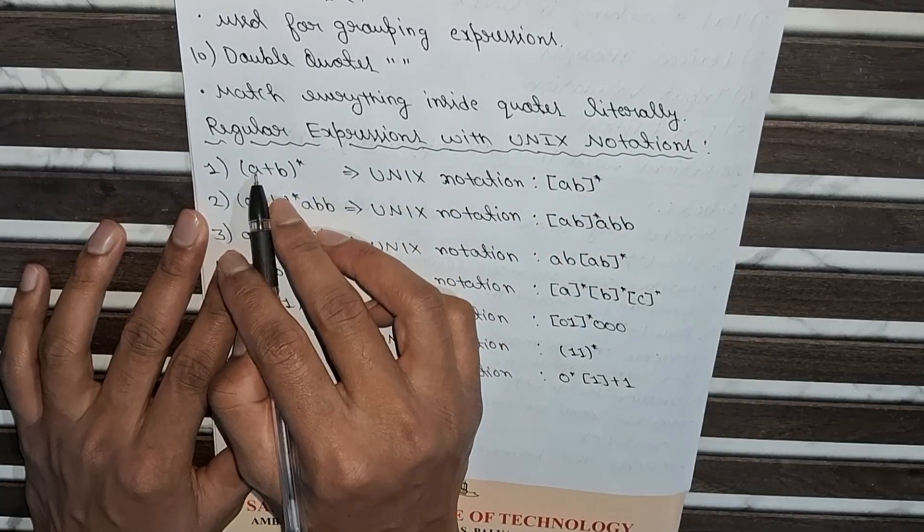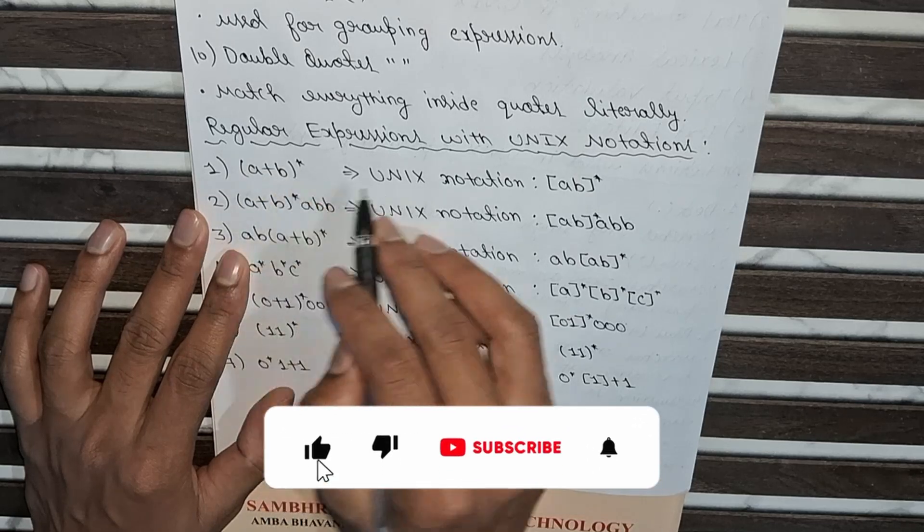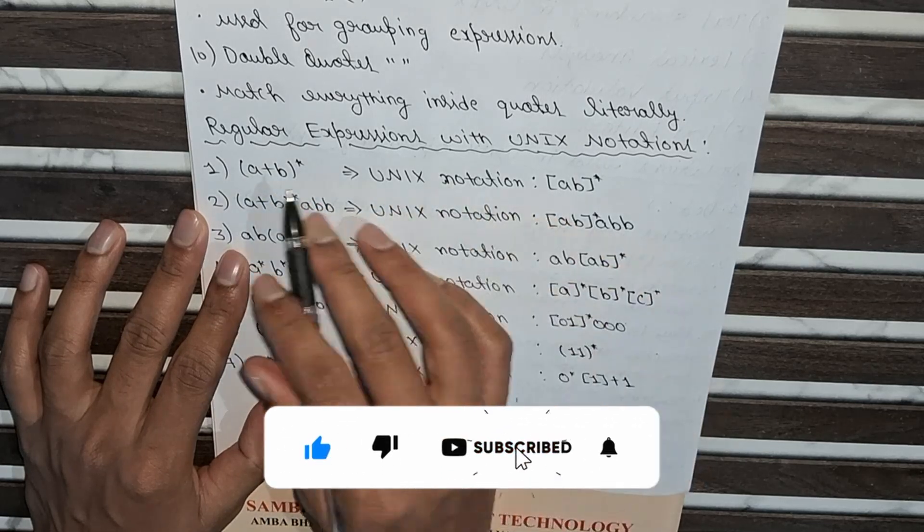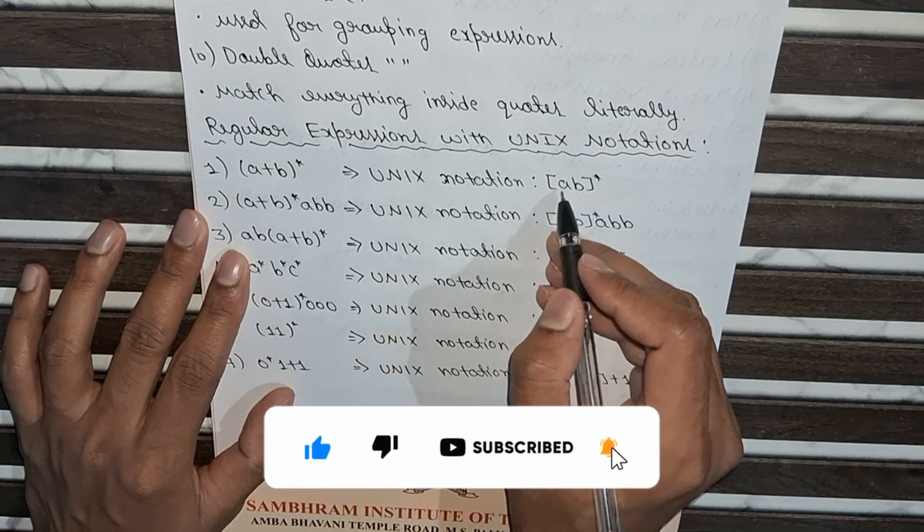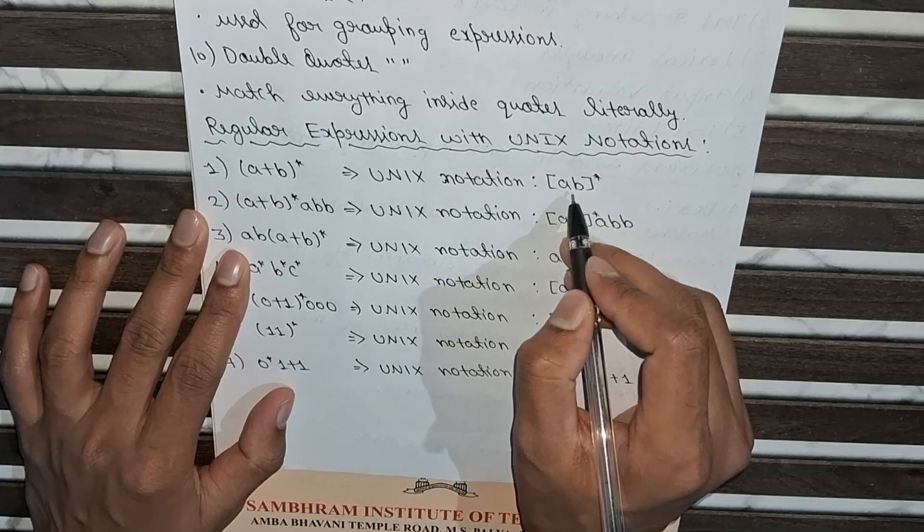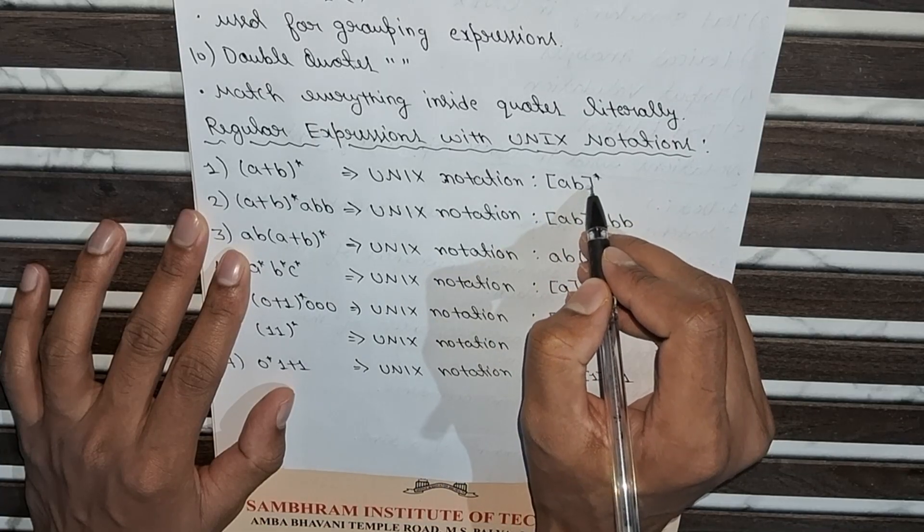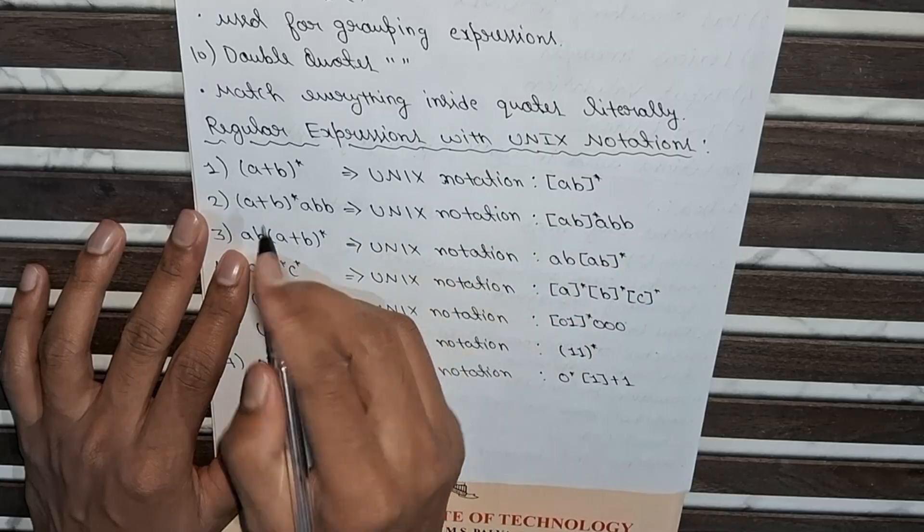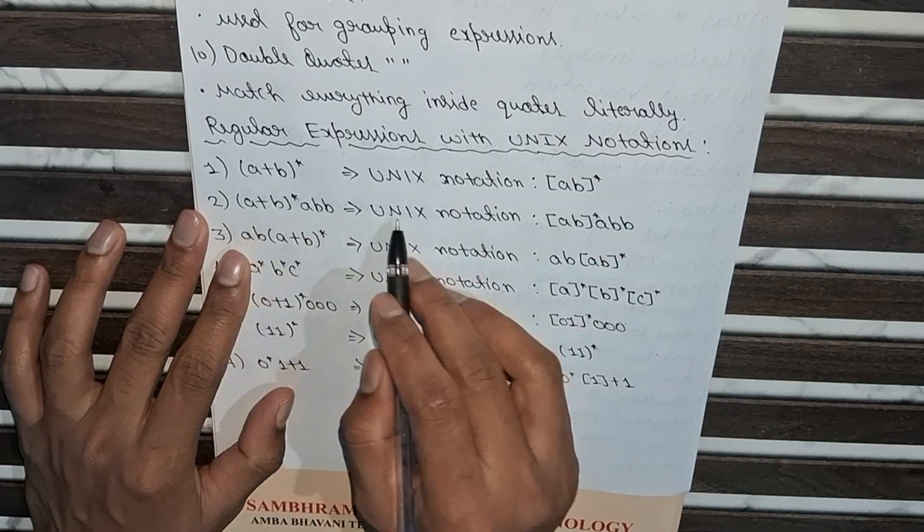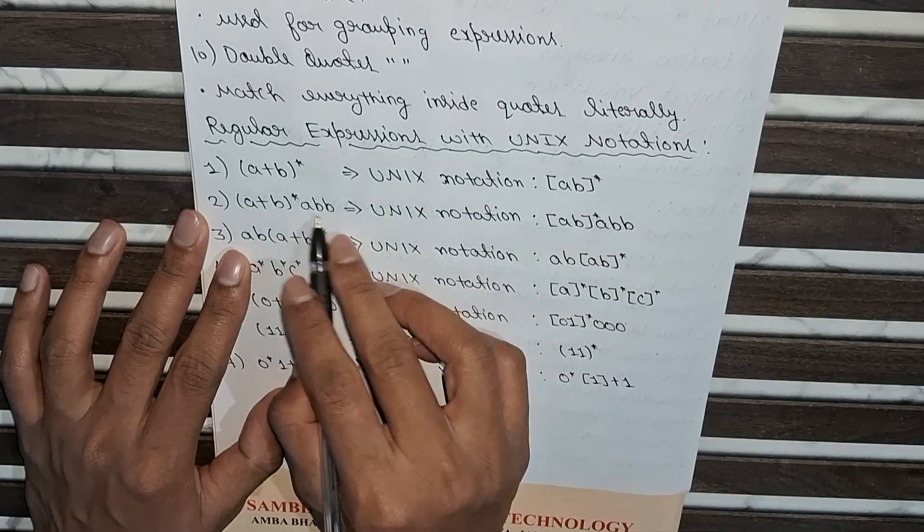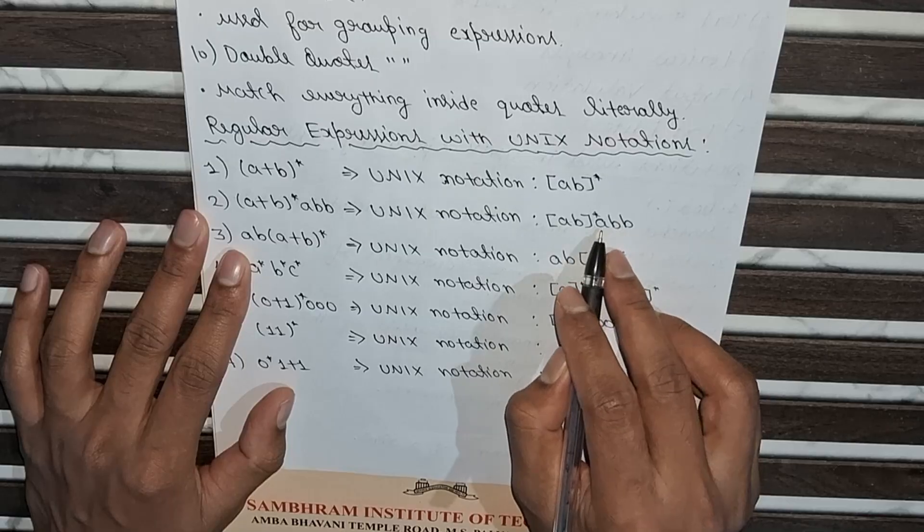So firstly we will see (a+b)*. In Unix notation we will represent this regular expression under square brackets - we will write ab and after the square brackets we will write star. In the second one we will do the same thing up to here, and the rest we will write as it is abb. Now in third, ab(a+b)* in Unix notation...